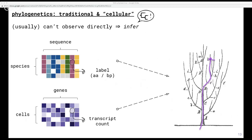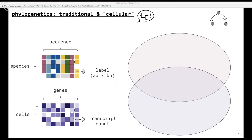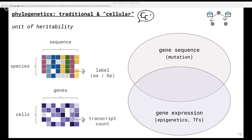In particular, phylogenetics takes an alignment matrix of organisms by their sequences — which might be genes or proteins — and tries to synthesize this matrix into a tree that explains ancestry between organisms. Whereas cellular phylogenetics takes a gene expression matrix of cells by the genes in their genome and tries to synthesize this matrix into a tree that explains the relationships between cells. There are multiple axes where these two types of phylogenetics overlap or differ.